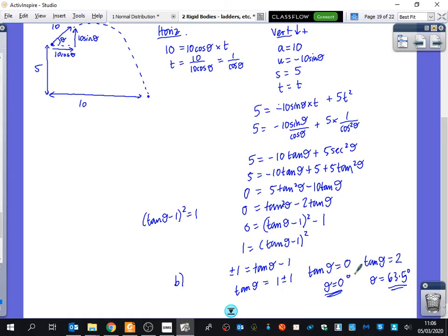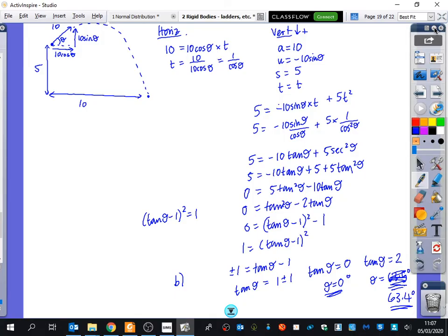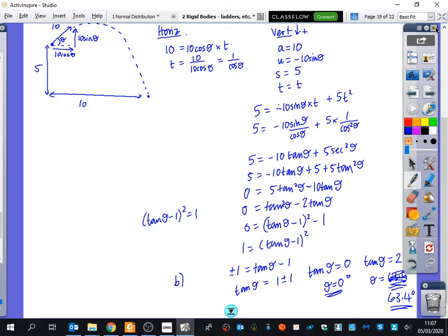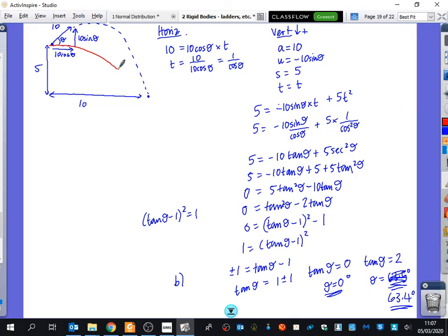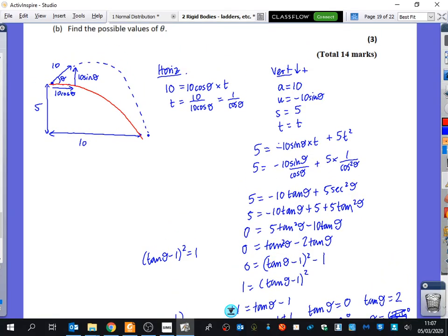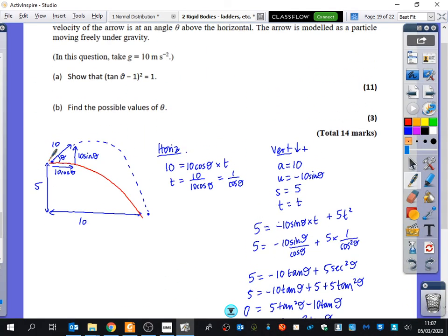Wasn't it 0.46 though? Oh, so 63.4. So I always like to look back at the diagram now and think, does this make sense? Okay, so one of them is it's just being shot. One of them is that theta is 0, so it's being shot like this and it just naturally falls like that. The other one is it's being shot at 63 degrees. So it's being shot like this and it's falling like that.